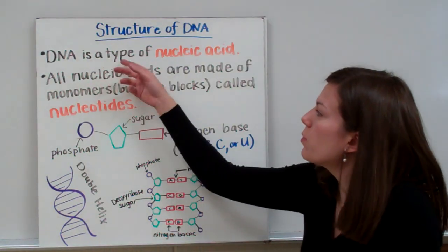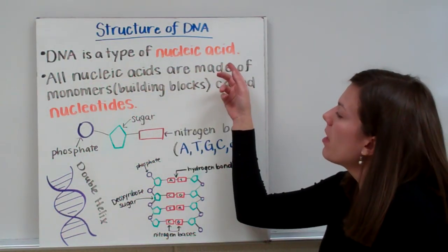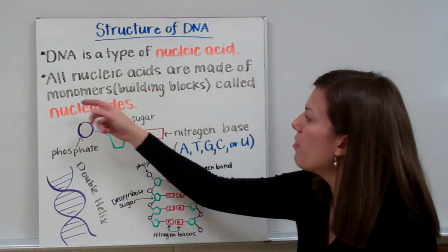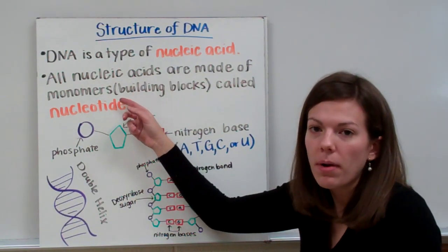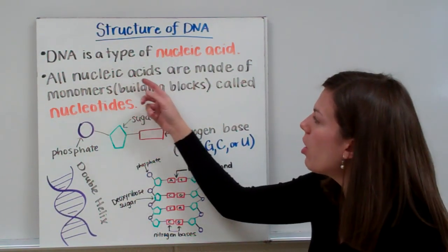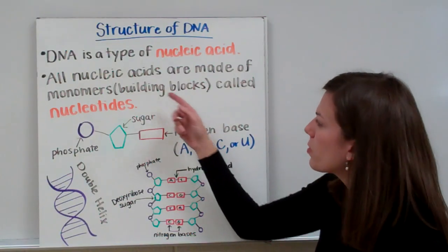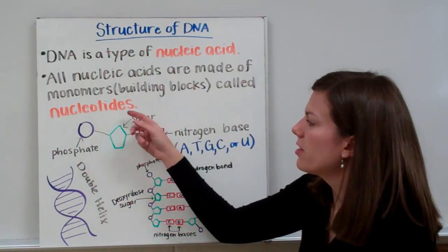DNA is one type of nucleic acid. It's important to know that all nucleic acids are made of monomers. Another word for monomer is a building block. So all nucleic acids are made of building blocks called nucleotides.